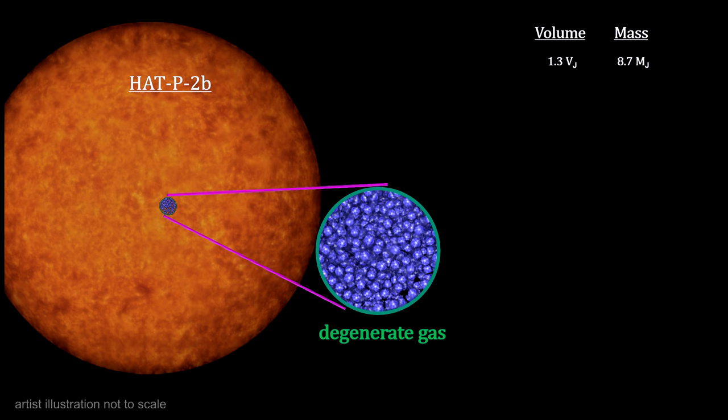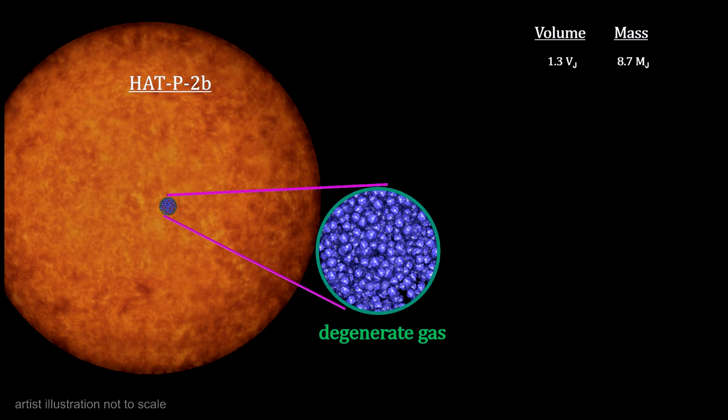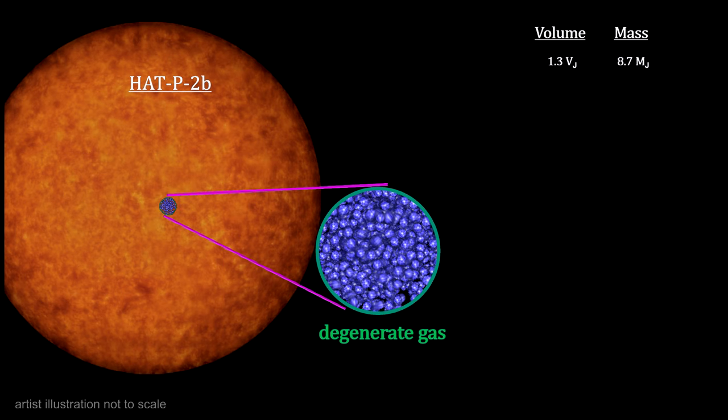Outward thermal pressure does not go up to meet the added inward pressure caused by the added mass. The gas is said to have become degenerate.